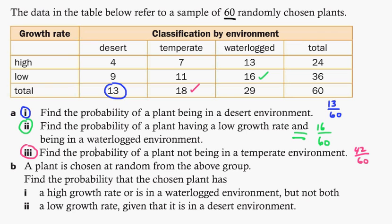Now, a plant is chosen at random from the above group. Find the probability that the chosen plant has a high growth rate or is in a waterlogged environment, but not both. So we want high growth rate, which would be right here, right here. Waterlogged, but not both. So we don't want this one right here. We don't want that one. So let's just add this. Four plus seven is 11, plus 16 is 27 out of 60.